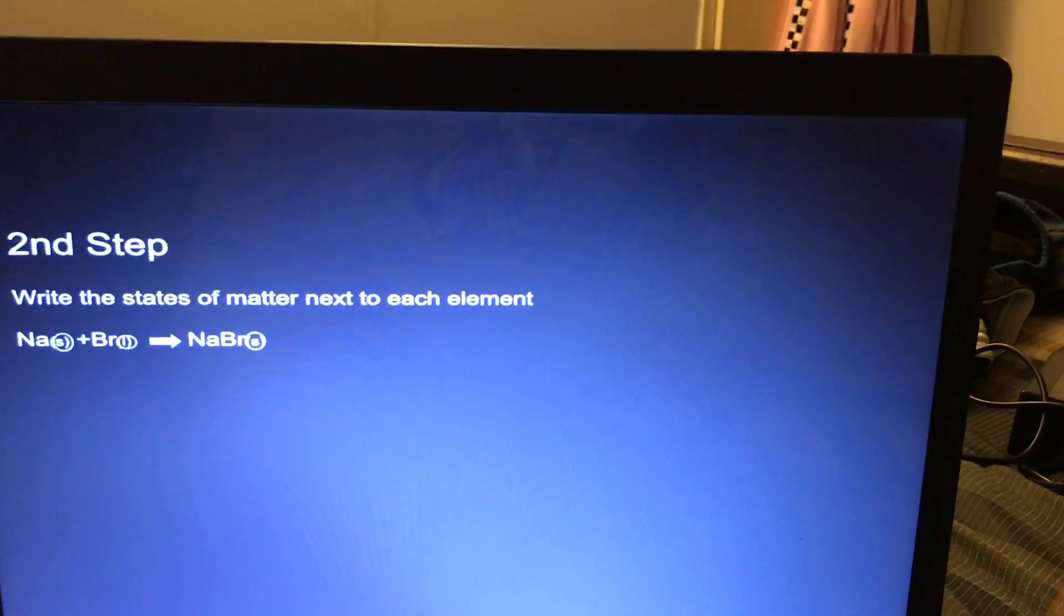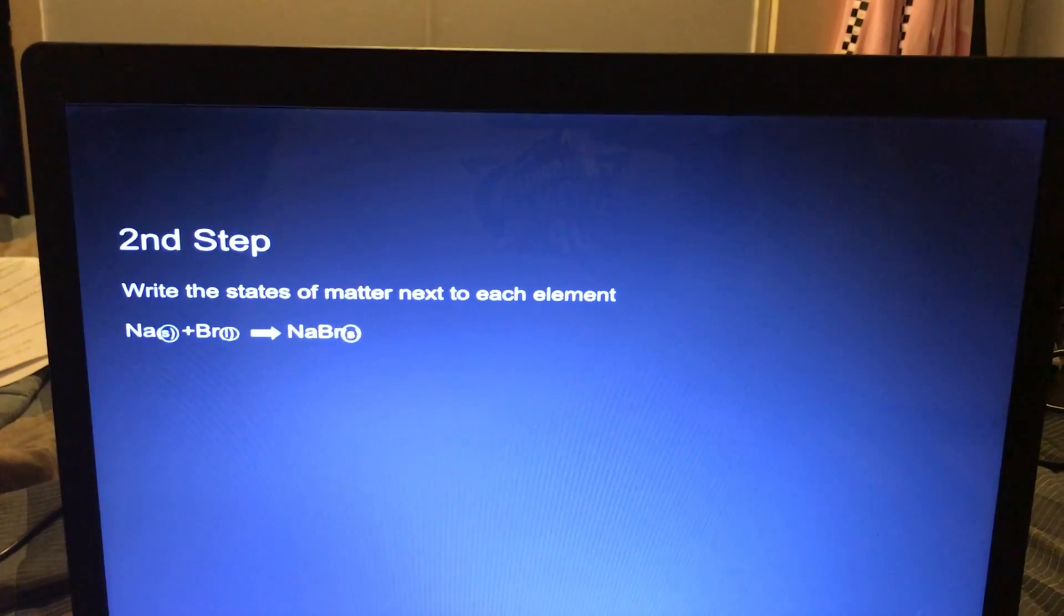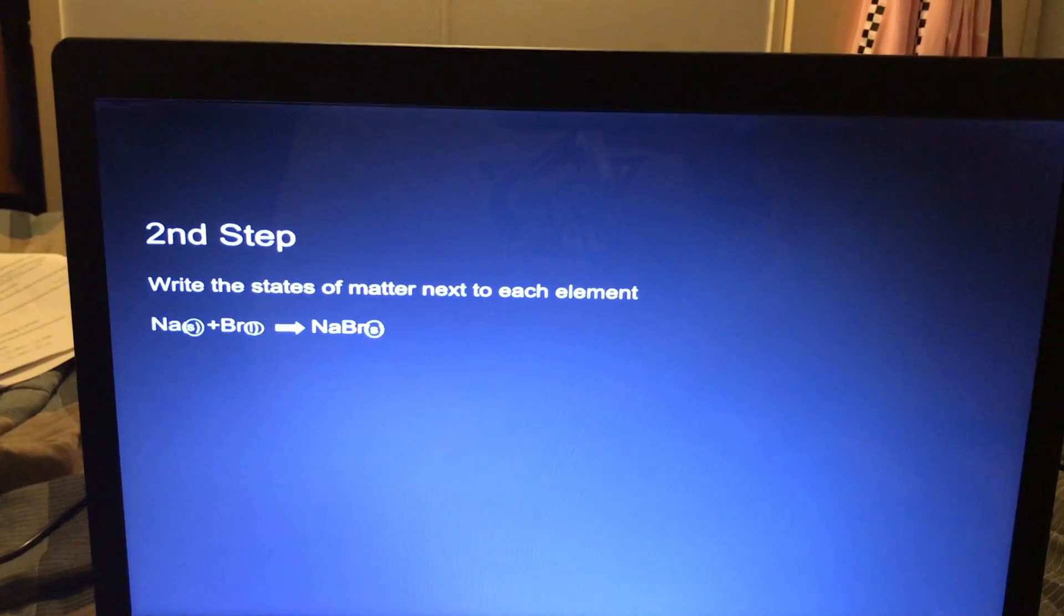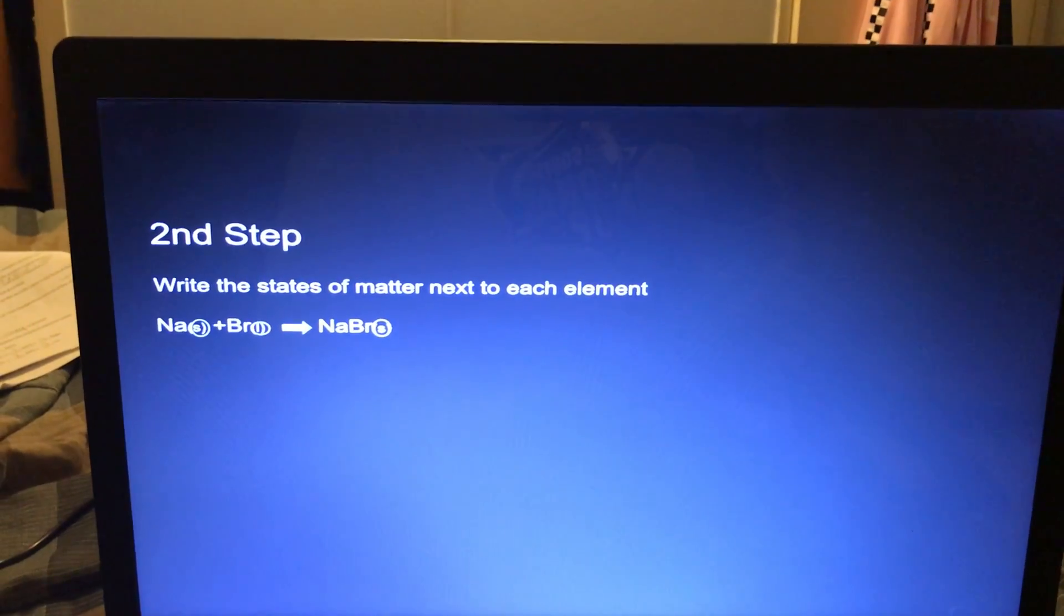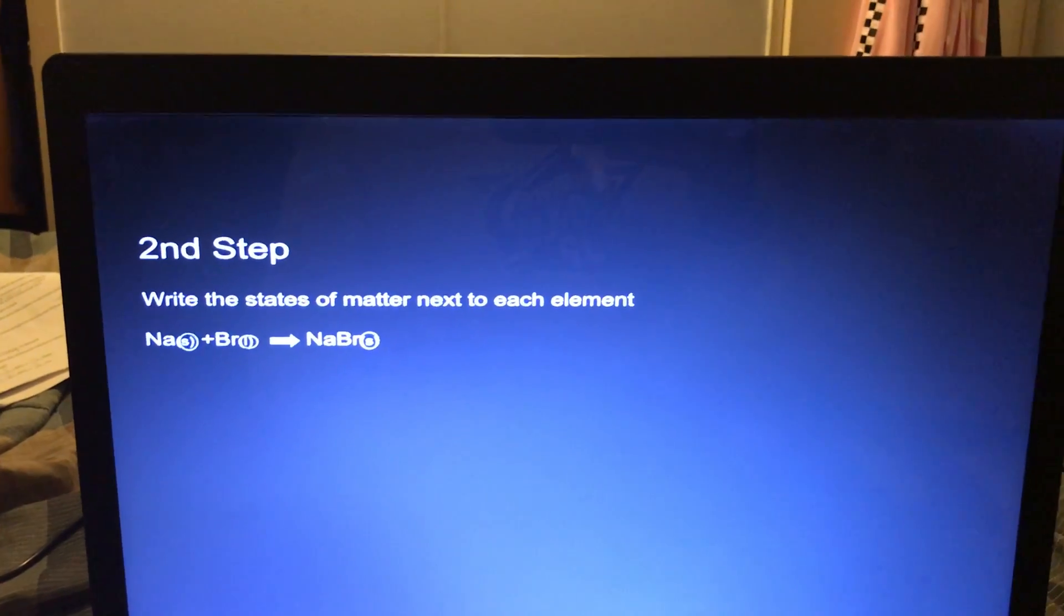The second step would be to write out the states of matter next to each element. So for Na, you'd write solid, for Br, you'd write liquid, and then for NaBr, you'd write S for solid.